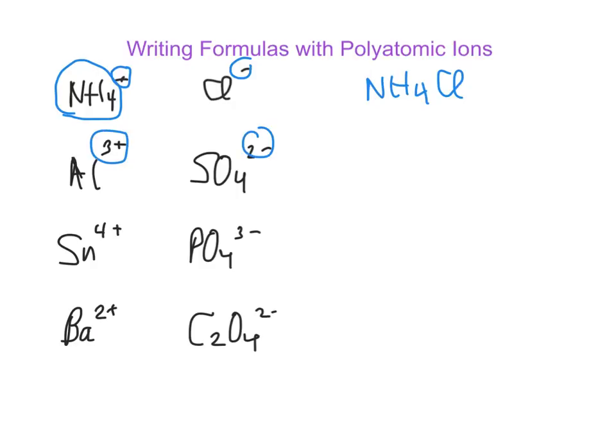3+ and 2-. I'm going to crisscross the 2 and crisscross the 3. So it goes Al2, but then I need to put the SO4 in parentheses, and then say I have 3 of those. So this 3 goes all the way outside there. And you'll notice that in my compound, there's no charges. You don't see the charges lying around.